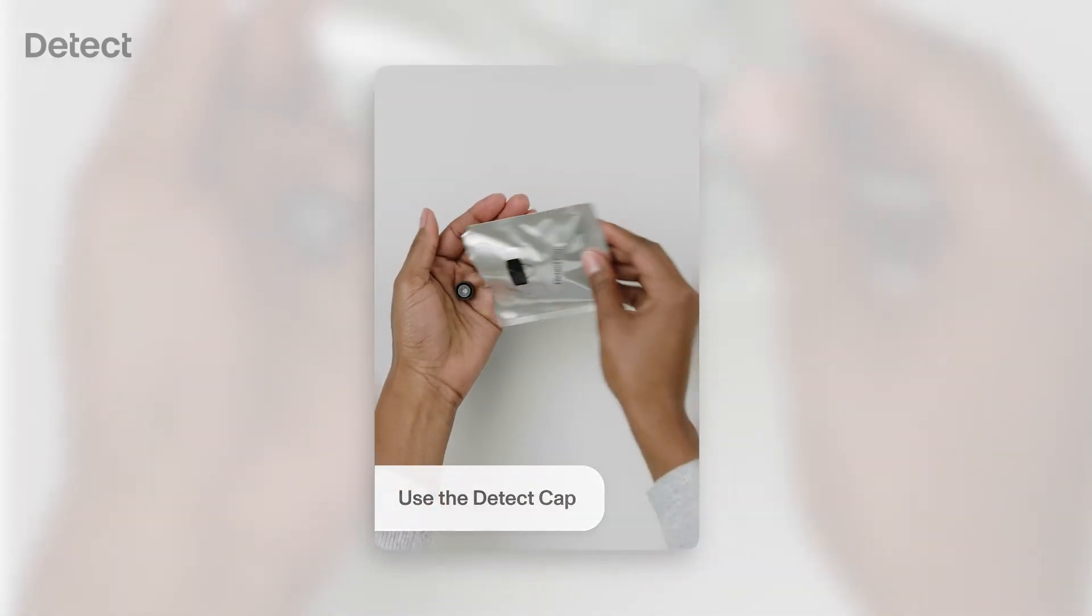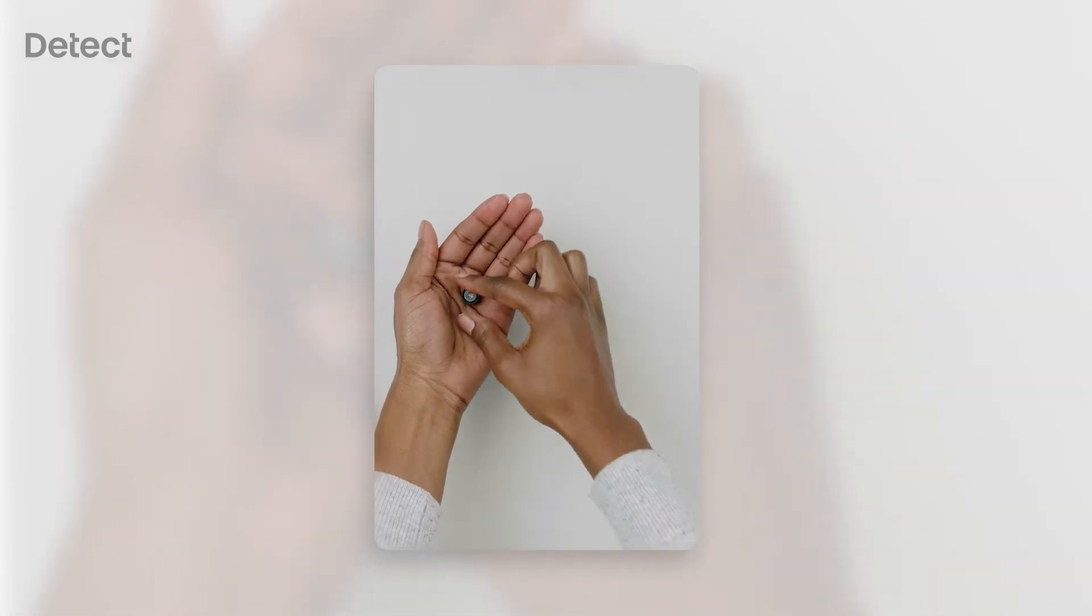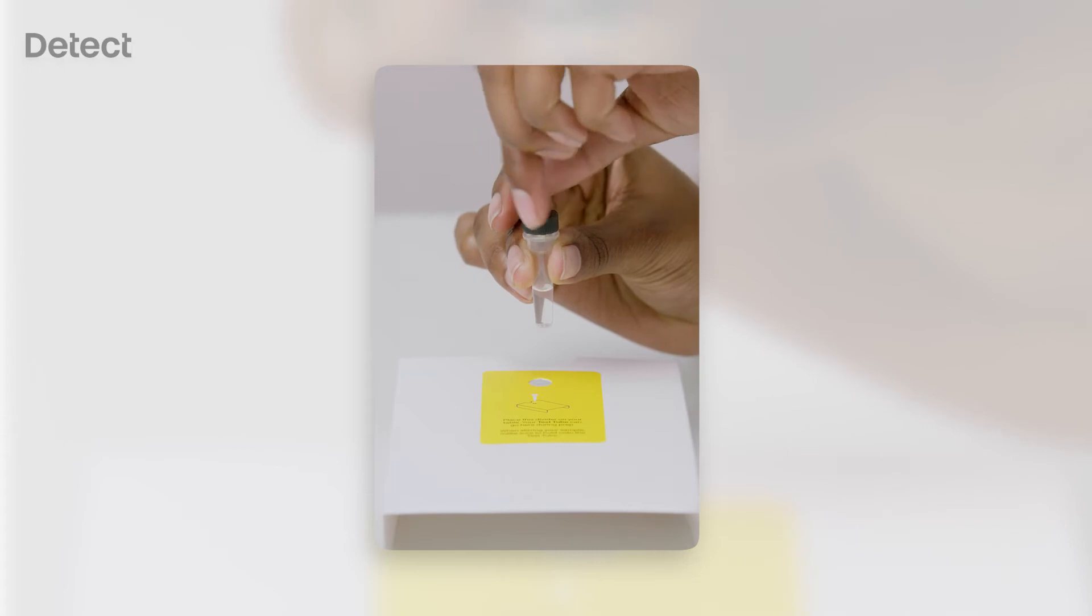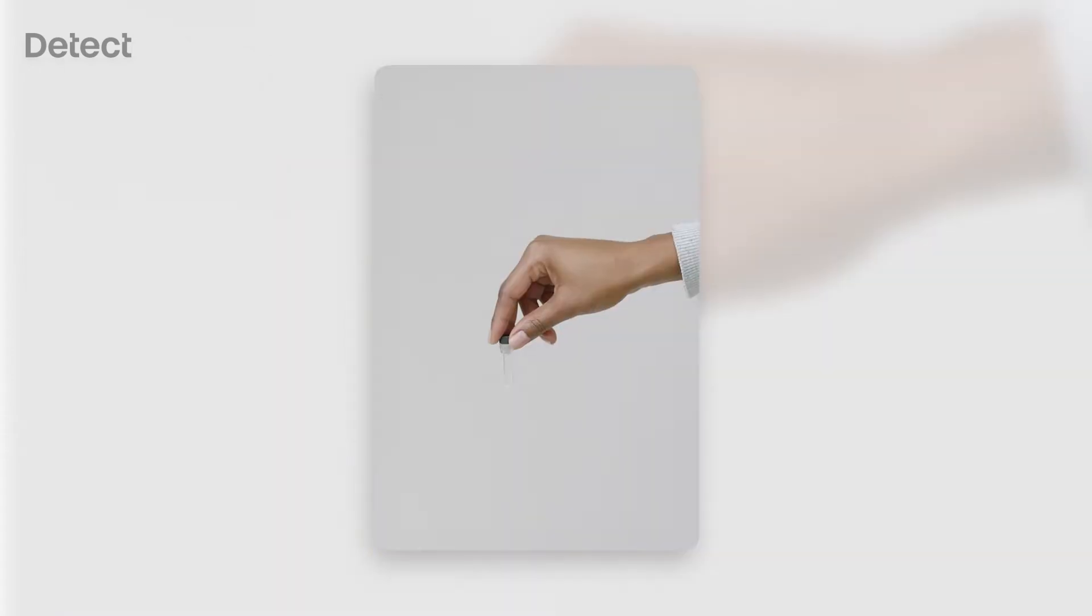Open the Detect Cap pouch. Carefully remove the cap, which contains a small reagent bead. Tightly screw the Detect Cap onto the test tube. Hold the test tube by the cap and turn it upside down. Firmly shake the tube side to side for 10 seconds. Turn the tube right side up.